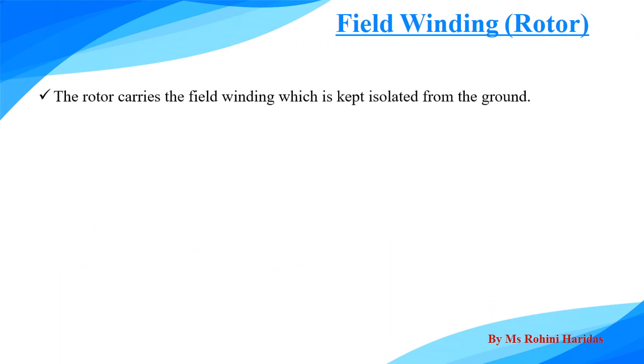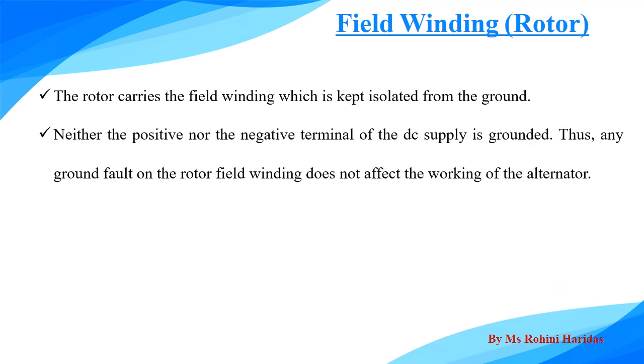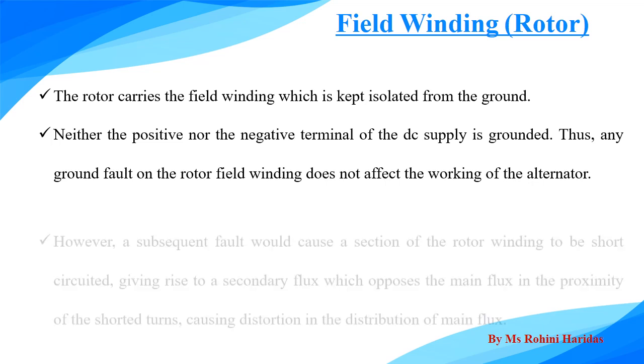Field winding, that is the faults on the rotor side. We know that the rotor carries the field winding which is kept isolated from the ground. That is, neither positive nor negative terminal of the DC supply is grounded and therefore, any ground fault on the rotor field does not affect the working of the alternator.